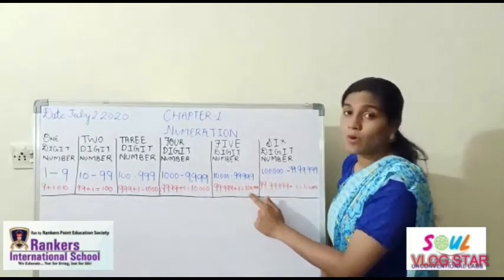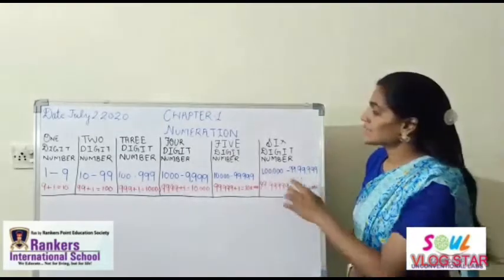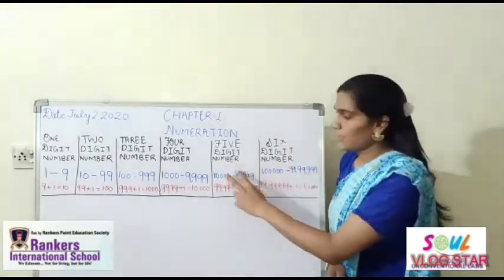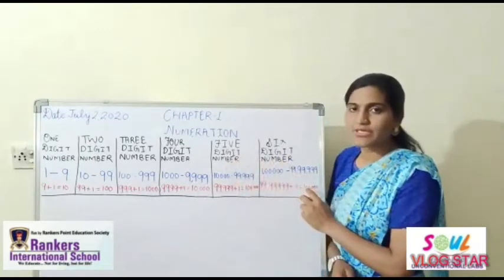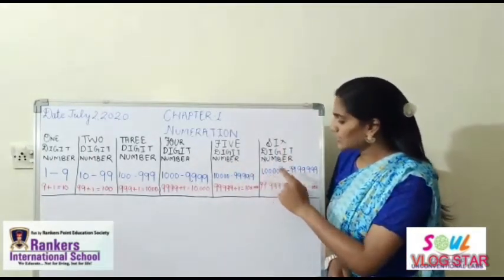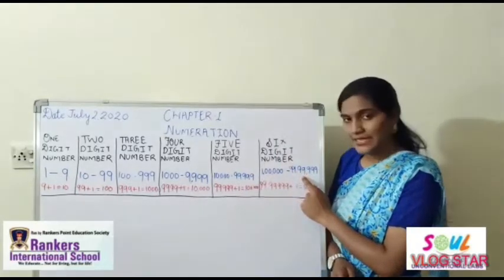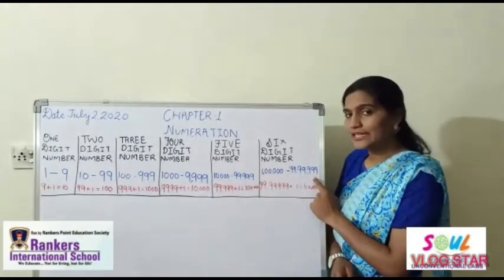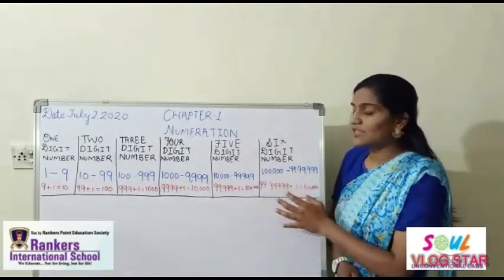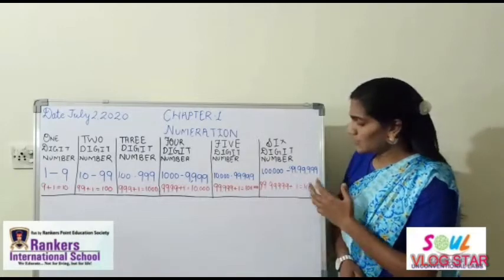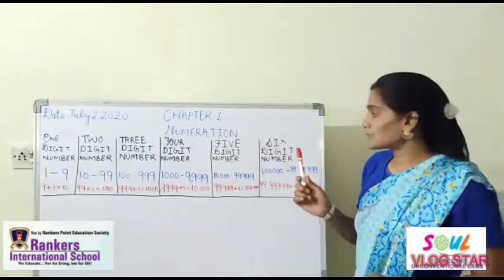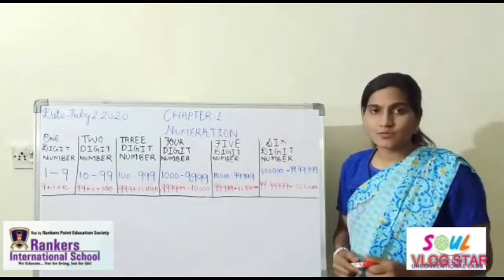If we add 1 to 99,999 it will become 1 lakh. Now 1 lakh is a six digit number. You have to study from 5 digit to 6 digit numbers in this class. Six digit numbers start from 1 lakh to 9,99,999. And if we add 1 to 9,99,999 it will become 1 crore. So children, you have to study up to six digit numbers in Class 4.